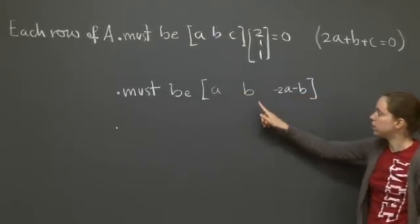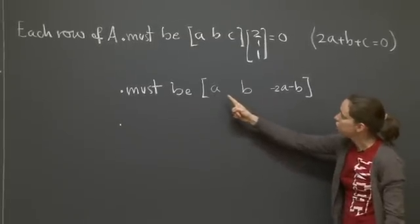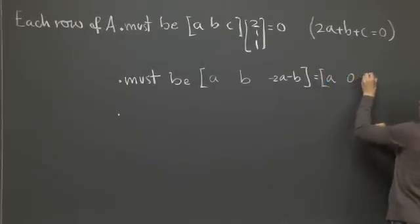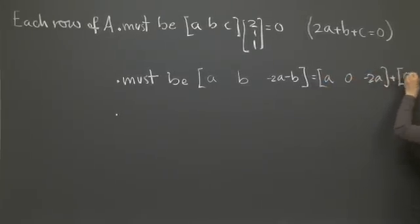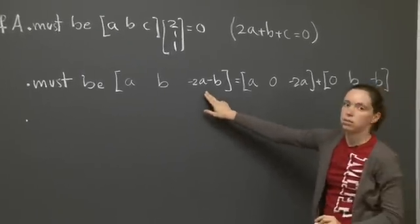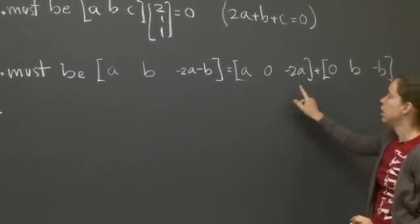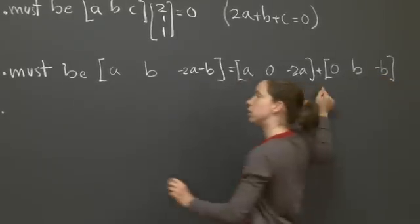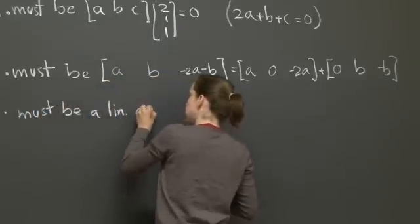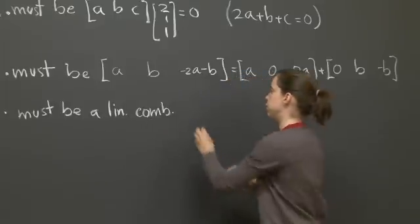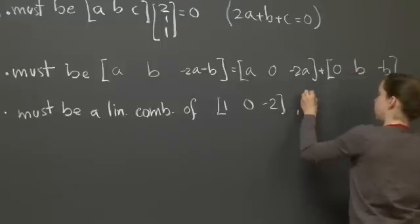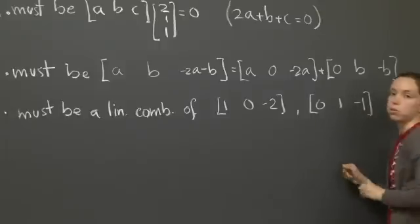So furthermore, we can say that it, well, one thing that you can do, let me write this here to help you, it'll be A, 0, minus 2A plus 0B minus B. See? So what I'm doing is I'm splitting this into the linear combination of two vectors. I can pull out the A out of this one and pull the B out of this one. It will be, must be a linear combination. That's what this means, linear combination of the following: 1, 0, minus 2, and 0, 1, minus 1. Does that make sense?